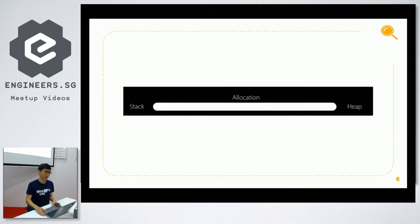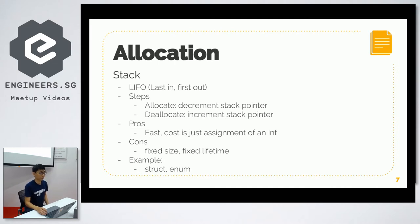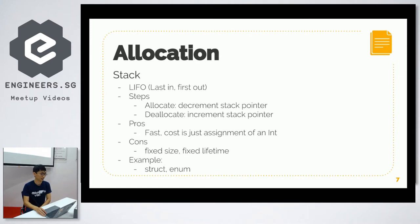Let's look at the first one: allocation. On one side we have the stack, and on the opposite side we have the heap. Stack allocation is like a normal stack data structure — it is a last-in, first-out data structure. The steps to allocate memory is just to decrement or increment the stack pointer.